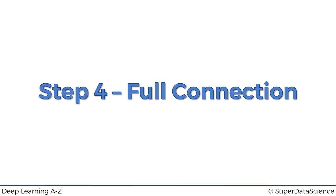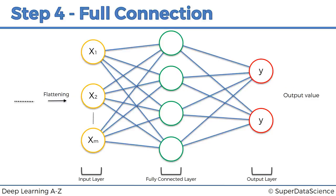Hello and welcome back to the course on deep learning. Today we're finally at step number four: full connection. So what is this step all about? In this step we're adding a whole artificial neural network to our convolutional neural network. So to all of the things we've done so far — convolution, pooling, and flattening — now we're adding a whole new ANN on the back of that.